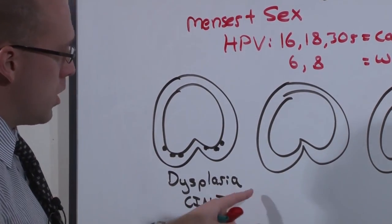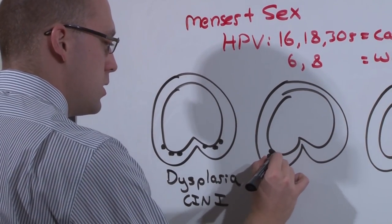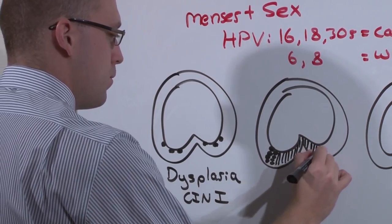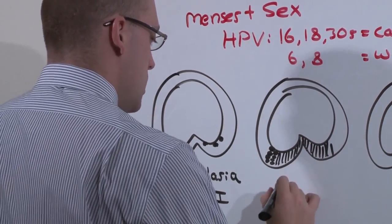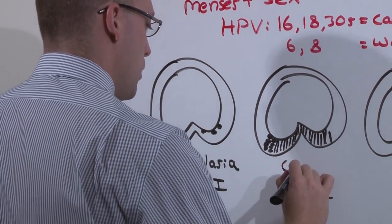If allowed to progress, these malignant-looking cells, still contained in the basement membrane, fill the epithelial layer. This is CIN3, or carcinoma in situ.